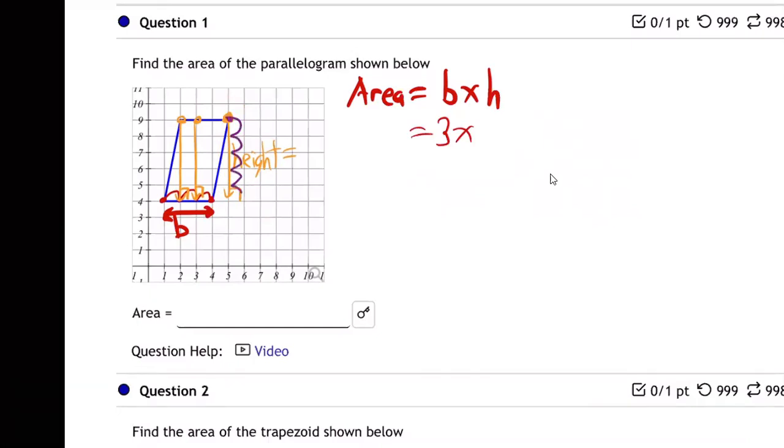One, two, three, four, five. So the height is five. And the base is three. So area is base times height, three times five equals 15. The area of that parallelogram is 15, because the base is three and the height is five.